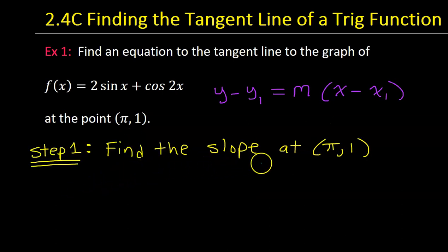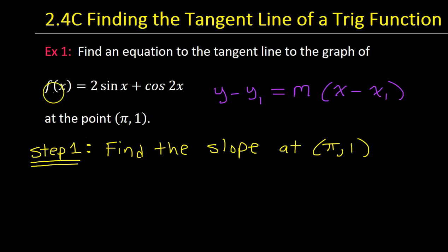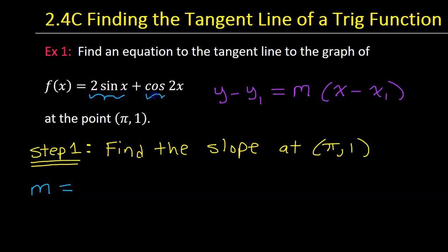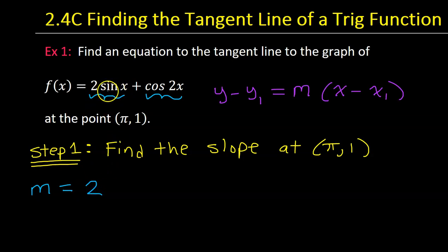Step one is to find the slope at the point pi comma 1. The slope of a curve at a point is the derivative, so we need to find the derivative of f of x. We can do the derivative one term at a time. Starting with the derivative of 2 sine x — when you have a constant in front, you leave the constant alone and take the derivative of sine. The derivative of sine is cosine.